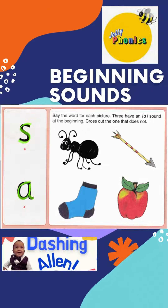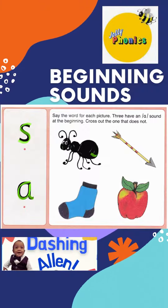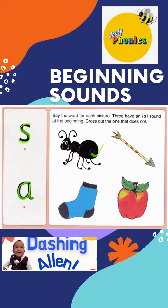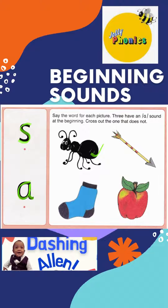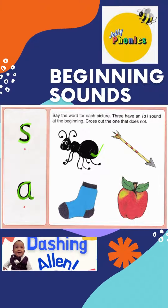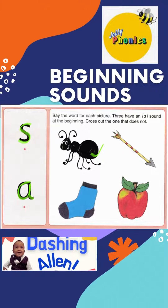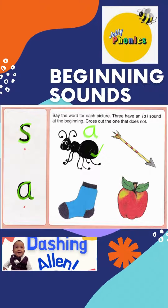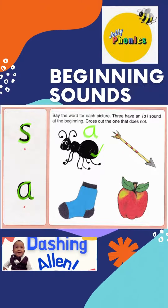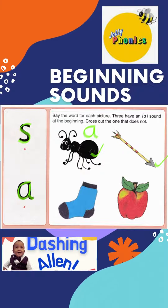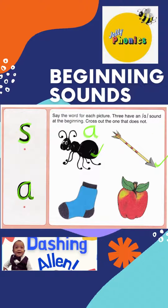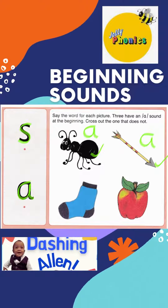Now can you tell me this picture? What is it? Correct! It's an ant. An ant's beginning sound is A. Very good! What about the second picture? It's an arrow. Arrow starts with A.